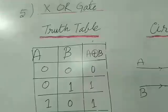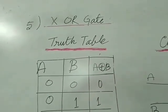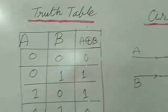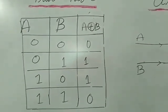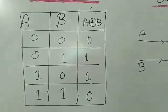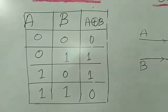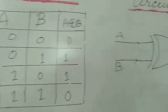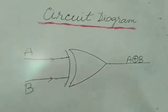The truth table for the XOR gate — the symbol of representation is a plus with a circle. Whenever we have an odd number of 1s in the input, the output will be 1; otherwise it is 0. The circuit diagram looks like this.